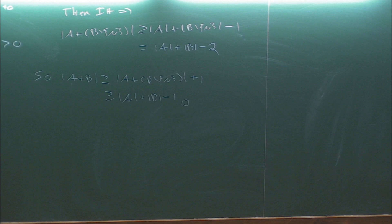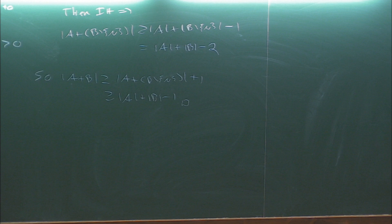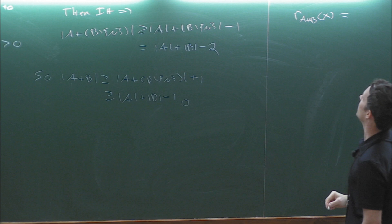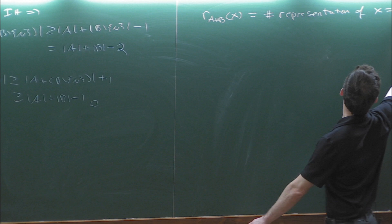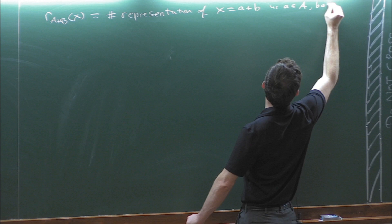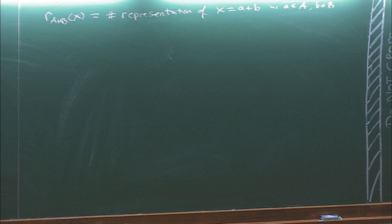That's a very simple proof - the arguments get much more complicated very quickly. The key thing to take from this is we needed this notion of a unique expression element. Let's give some notation: let r_{A+B}(x) be the number of representations of x as a+b with a∈A and b∈B.